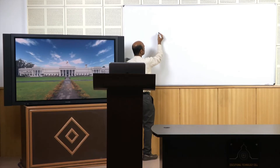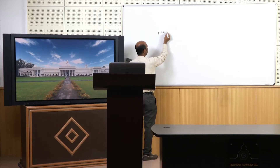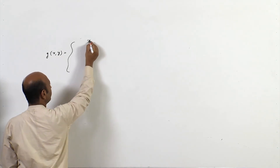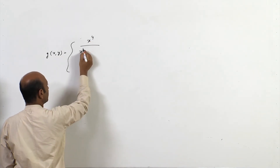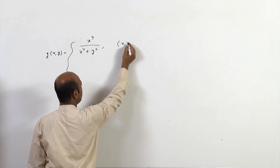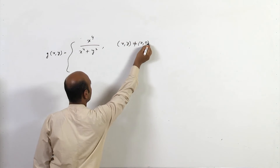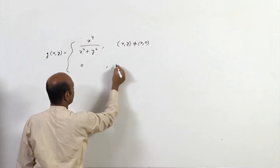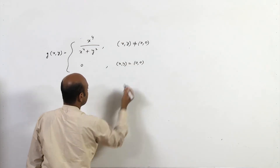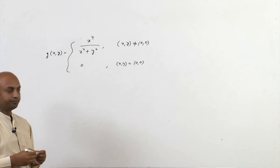The second example is g(x,y) = x⁴/(x⁴+y²) when (x,y) ≠ (0,0), and 0 when (x,y) = (0,0). Again we need to check whether this function is continuous at the origin by first checking whether the limit exists.